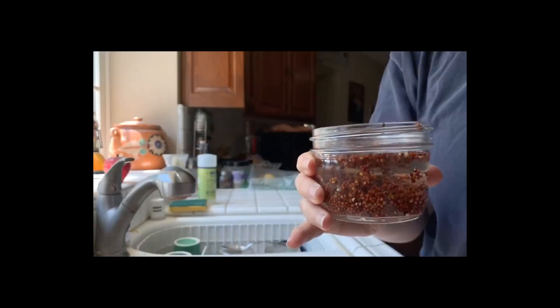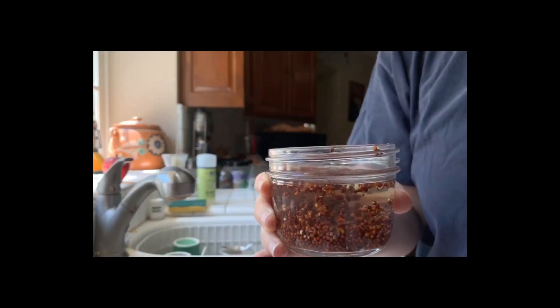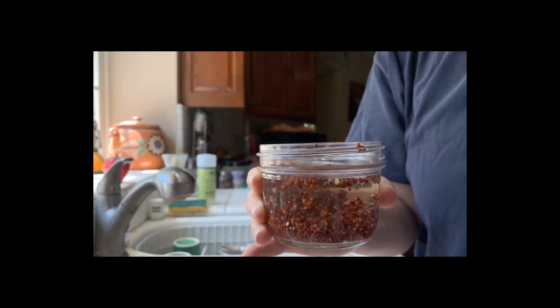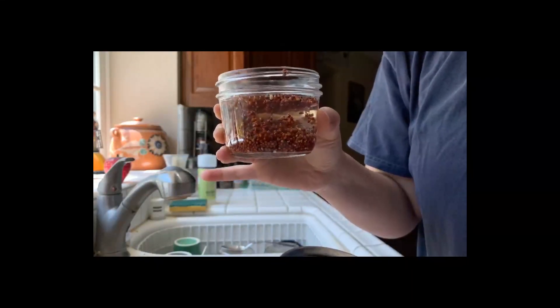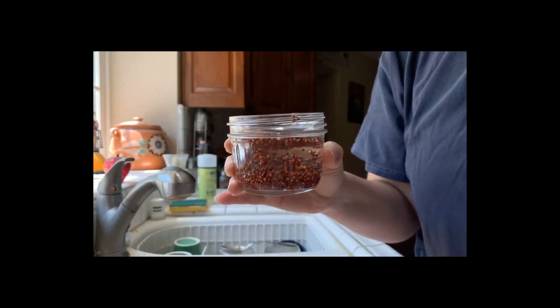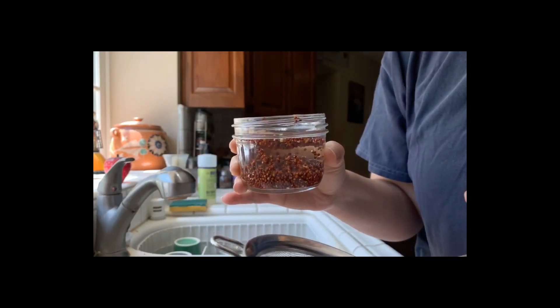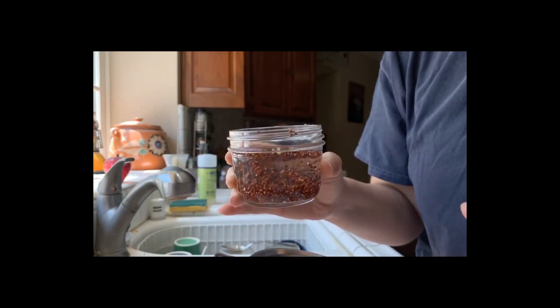Okay, so the broccoli seeds have been soaking overnight. What I'm going to do is strain out the water. I didn't have a sprouting lid, otherwise I would have just used that. But I'll go ahead and strain out the water and then show you what we do next in the sprouting tray.